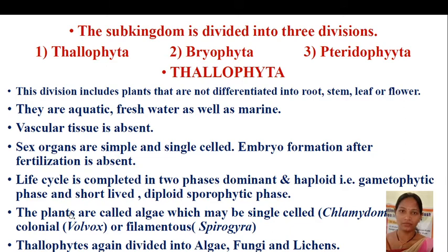Plants called algae may be single-celled like Chlamydomonas, or colonial like Volvox, or filamentous like Spirogyra, Oscillatoria and many more. Thallophytes are again divided into algae, fungi and lichens.